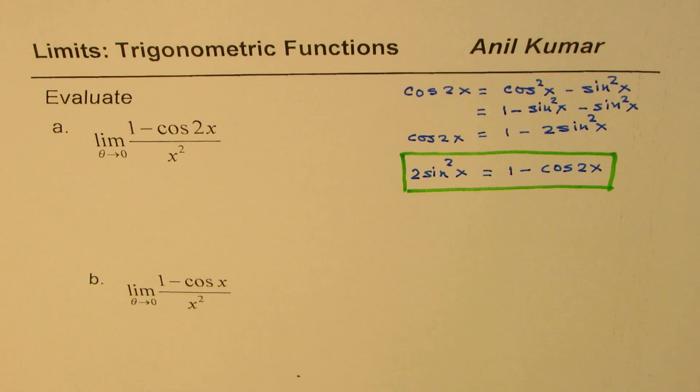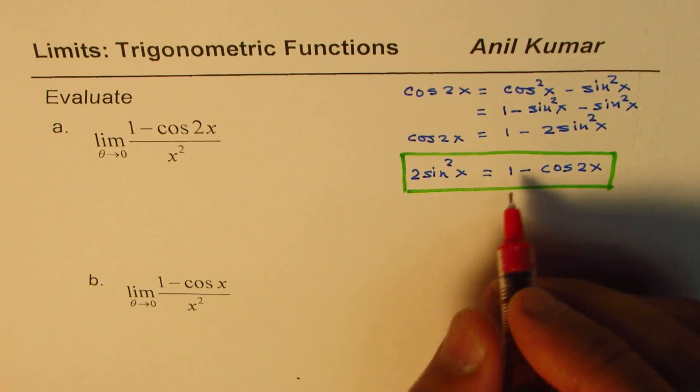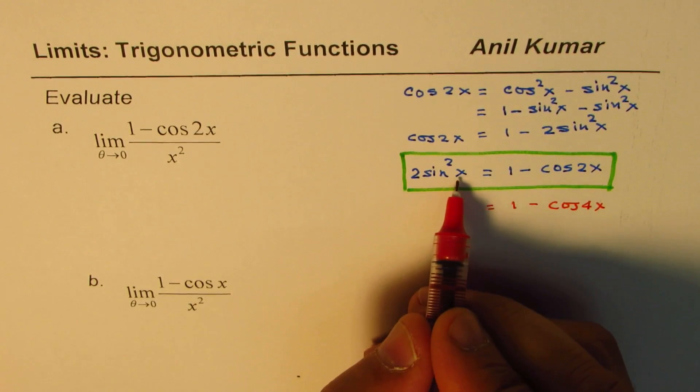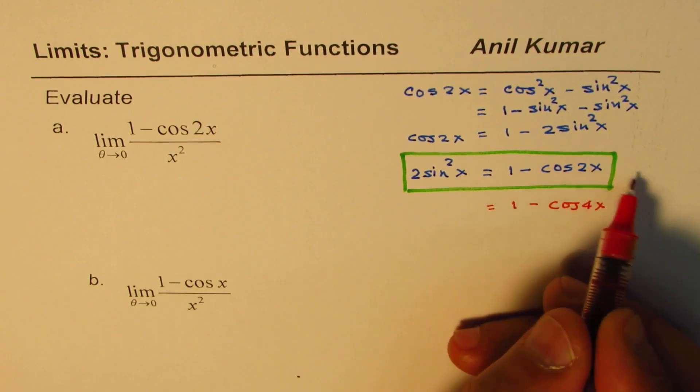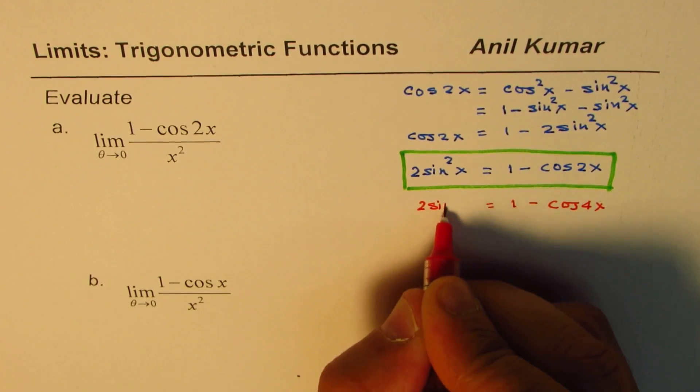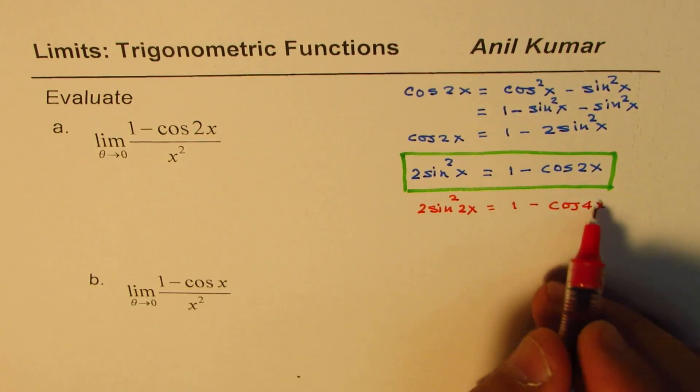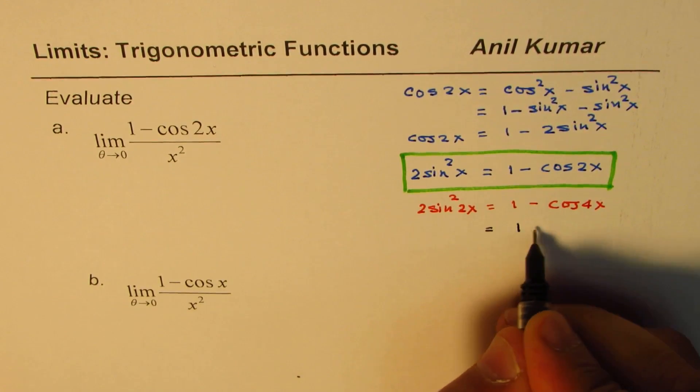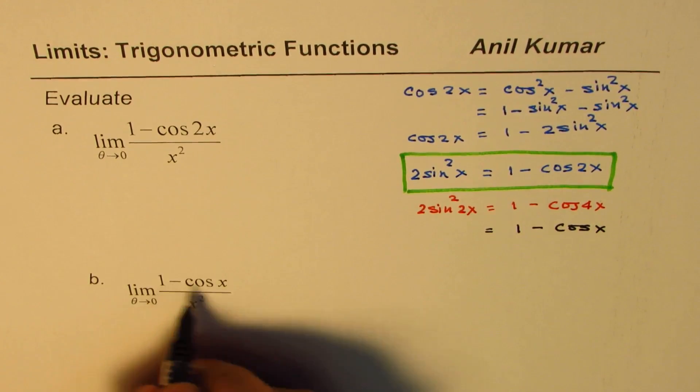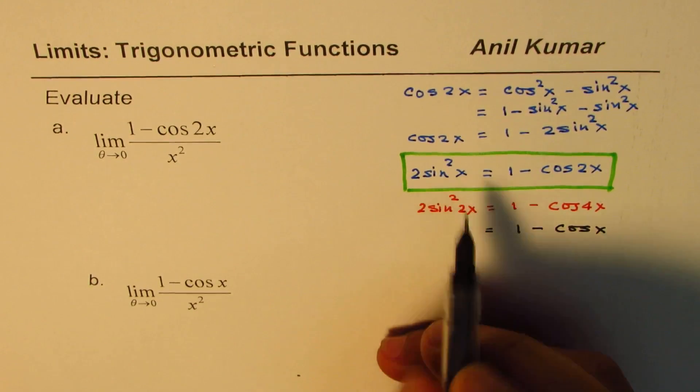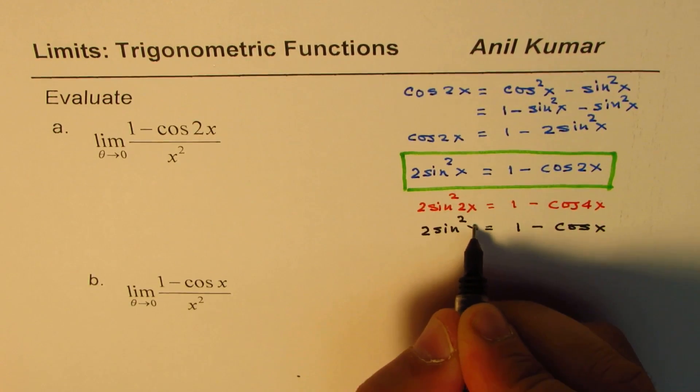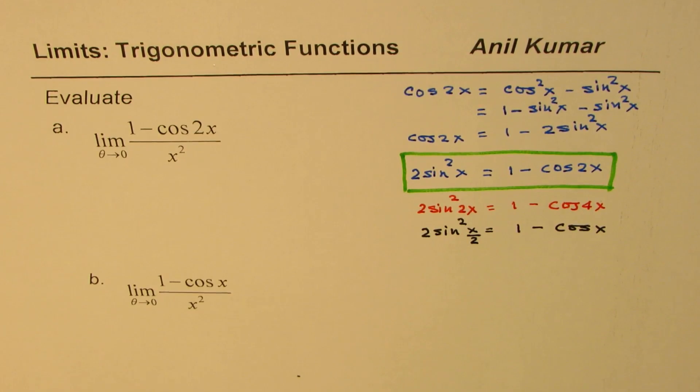Now it is interesting to know that if I write the right side as 1 - cos 4x, then I have replaced x with 2x, so I will write this as 2sin²(2x). Similarly, I could also write 1 - cos x. How will I write 1 - cos x? Well, cos 2x was sin²x, so it will be 2 times sin² of half of this, x by 2. So in general, I could write this expression as 1 - cos θ as 2 times sin²(θ/2).